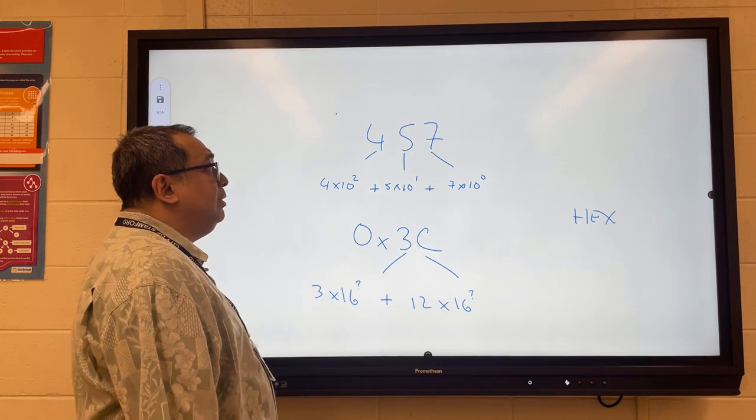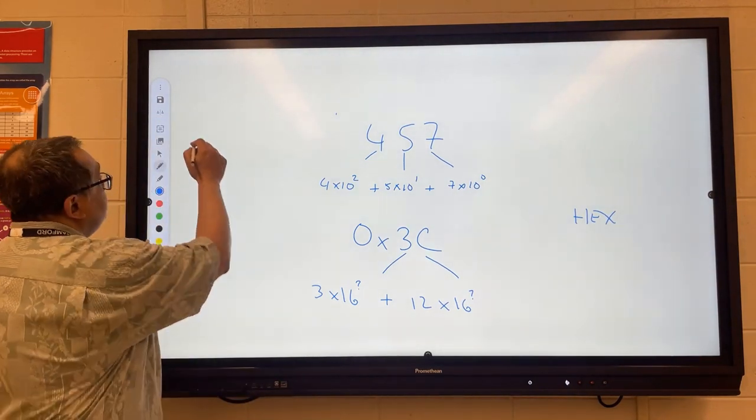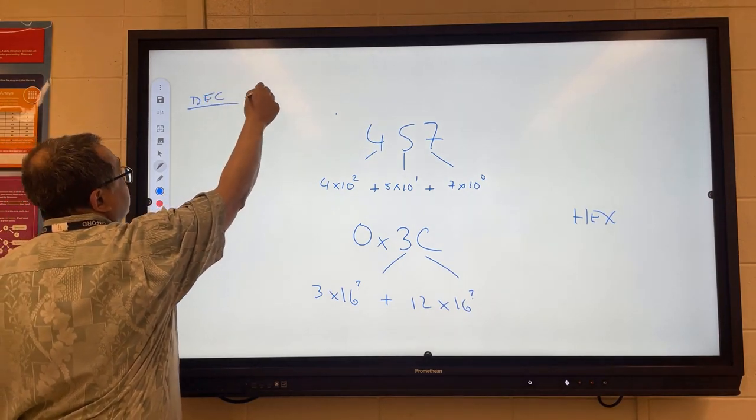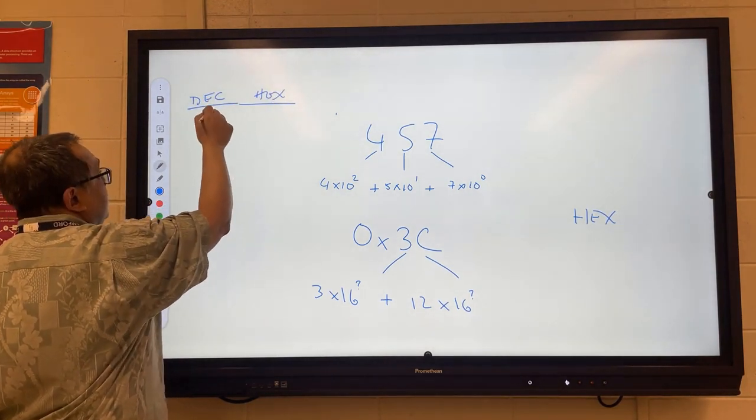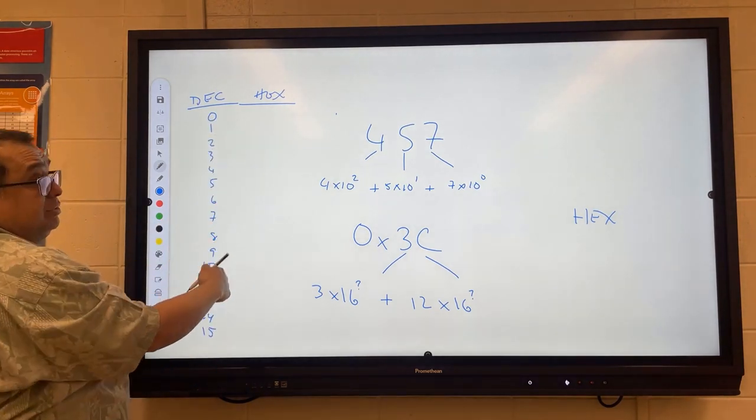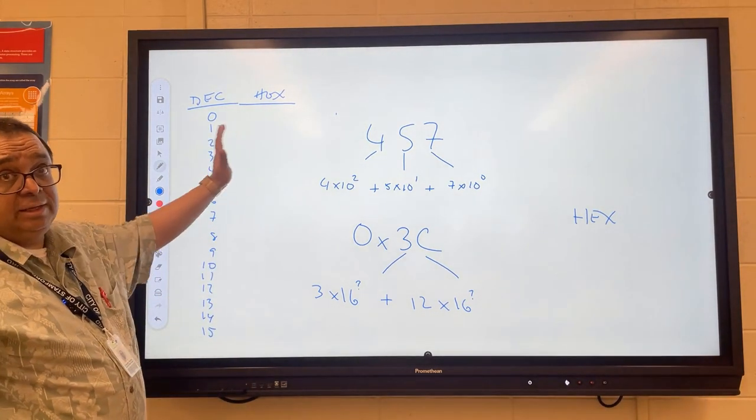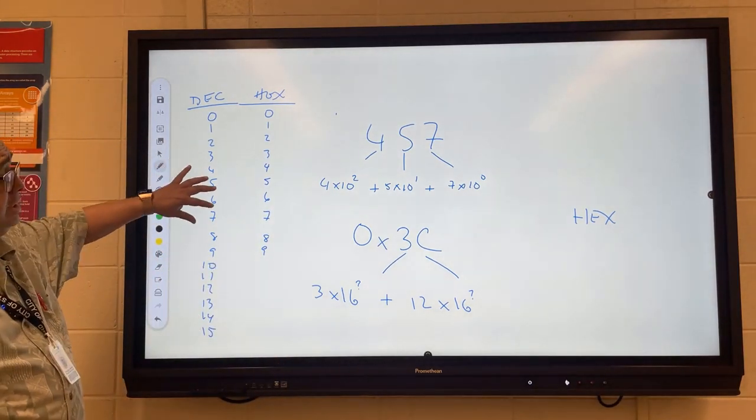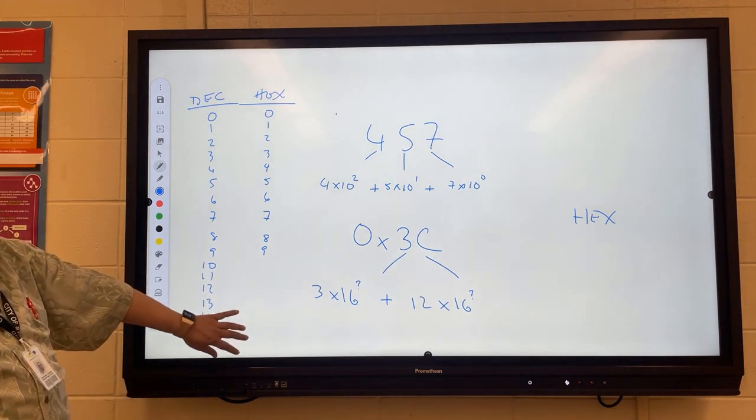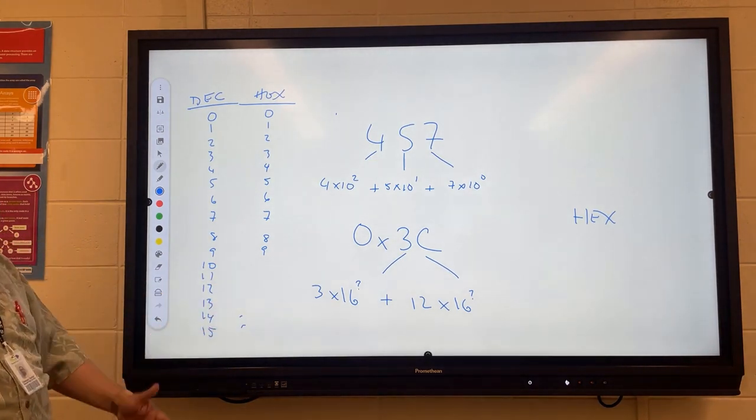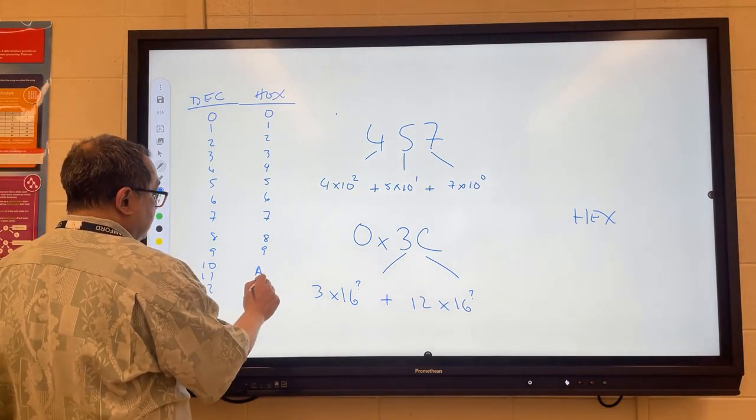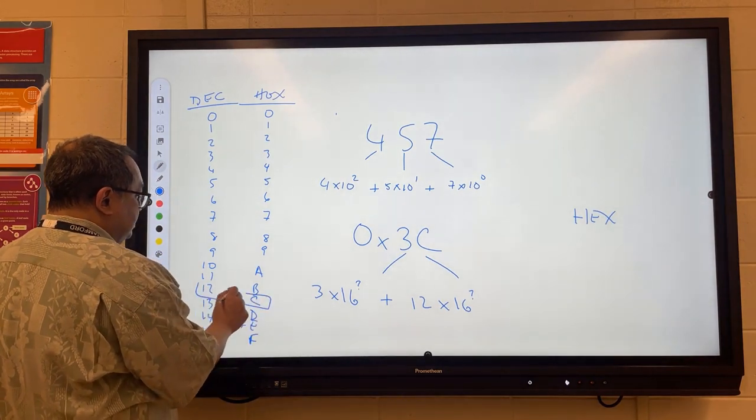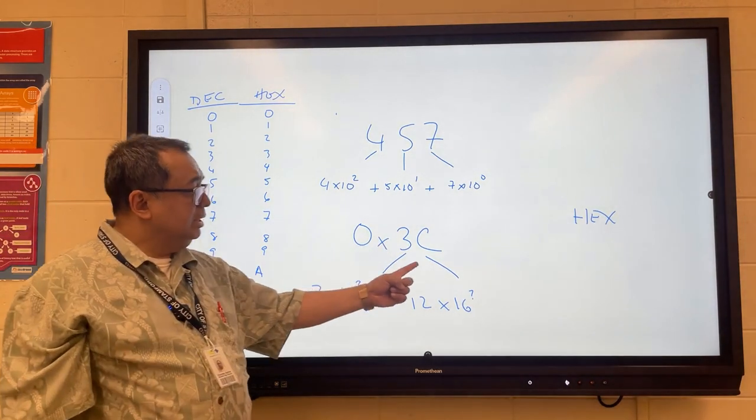So in case you don't remember, let me go through these with you. So if you have the, here's the decimal, and here's the hexadecimal equivalent. Now the first 10 digits, the first 10 digits, 0 through 9, they're identical in hexadecimal and decimal. But then over here, we need, we've run out of digits in decimal. So in order to represent these digits, we're going to use the letters of the alphabet. And so we'll use A, B, C, D, E, and F. And here's the c, which I was referring to, is equal to 12.